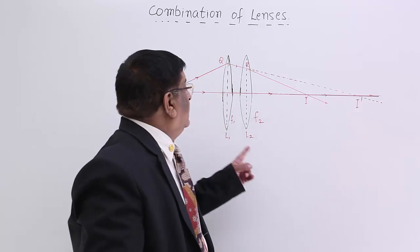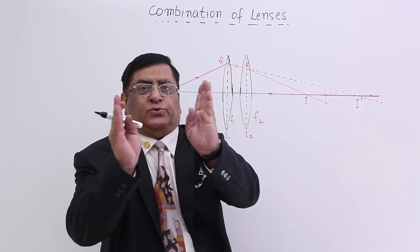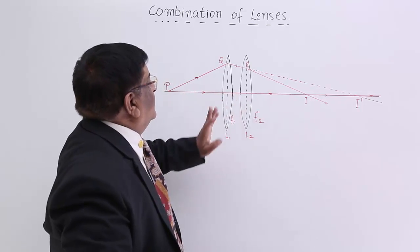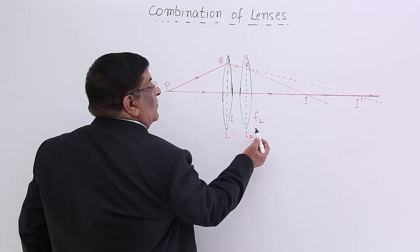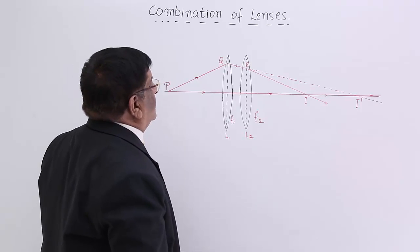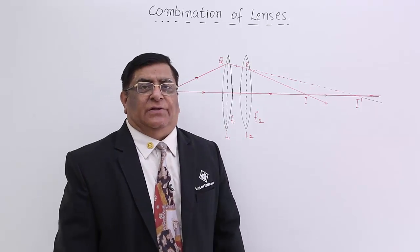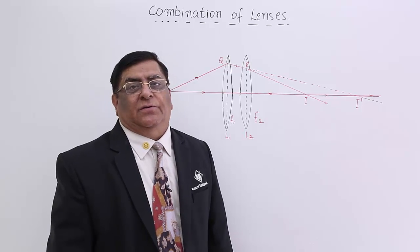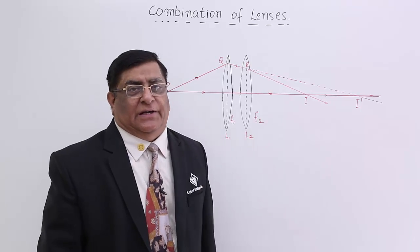There are two lenses, L1 and L2. They are placed close to each other, almost combined, with negligible distance between them. One has focal length F1, the other has focal length F2. Now we want to find out, if we combine them, what is the focal length of the combination and what is the power of the combination. We know the power-focal length relation.